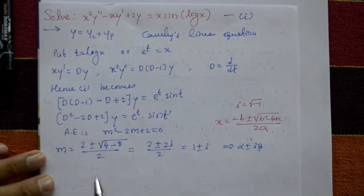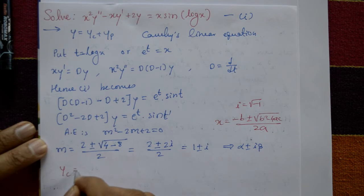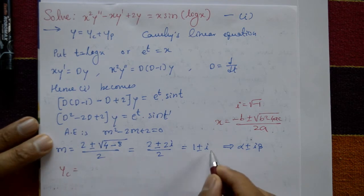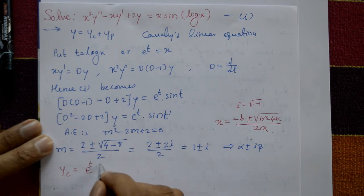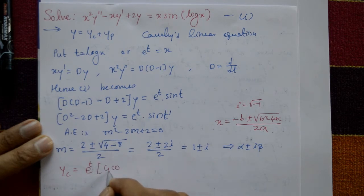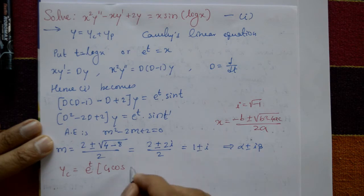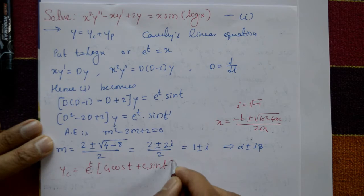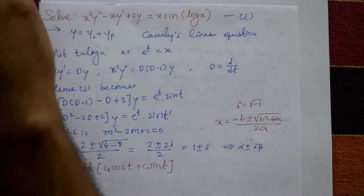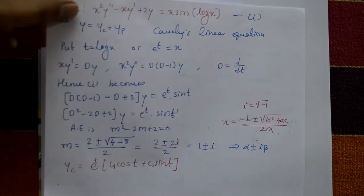The complementary function for complex roots is yc = e^(αt) · (c₁ cos βt + c₂ sin βt). With α = 1 and β = 1, this gives yc = e^t · (c₁ cos t + c₂ sin t).